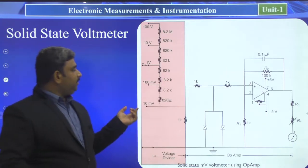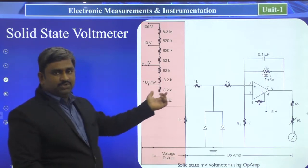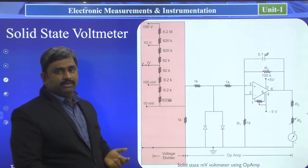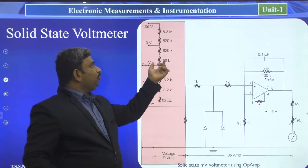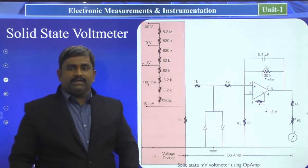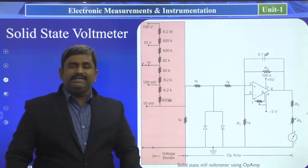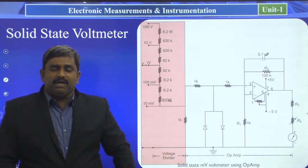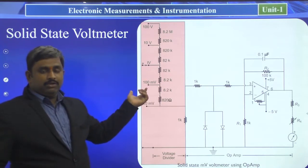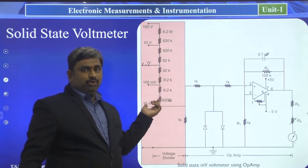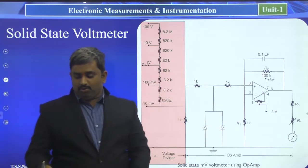The voltage divider network allows us to connect the voltmeter across multiple ranges: 0 to 10 millivolts, 0 to 100 millivolts, 0 to 1 volt, 0 to 10 volts, or 0 to 100 volts. This makes the voltmeter a multi-range instrument.